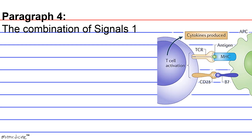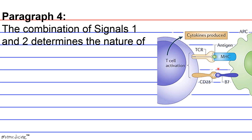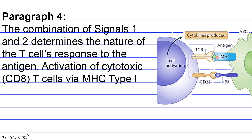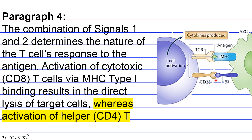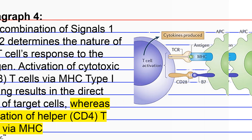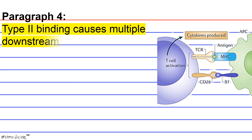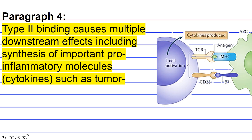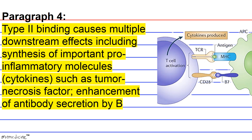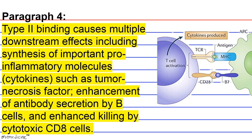Paragraph 4. The combination of signals 1 and 2 determines the nature of the T-cell response to antigenic activation. Activation of cytotoxic CD8 T-cells via MHC type 1 binding results in the direct lysis of target cells, whereas activation of helper CD4 T-cells via MHC type 2 binding causes multiple downstream effects, including synthesis of important pro-inflammatory molecules — cytokines such as tumor necrosis factor — enhancement of antibody secretion by B-cells, and enhanced killing by cytotoxic CD8 cells.